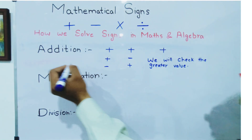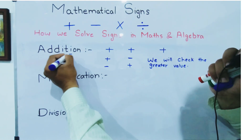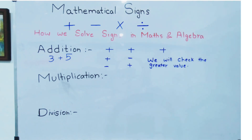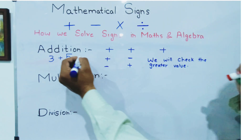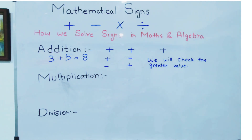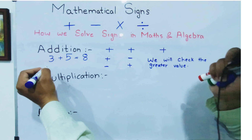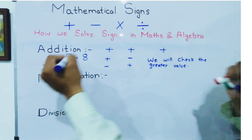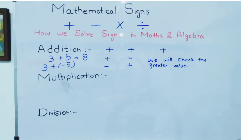For example, three plus five: if both values have positive signs — meaning plus three and plus five — then the answer will surely be positive, which is eight. But suppose the value is three plus minus five. Both values have different signs, and the greater value has a negative sign, so the answer will surely be negative.